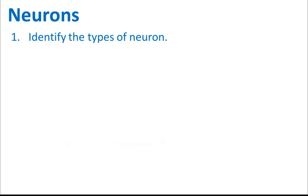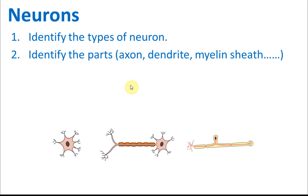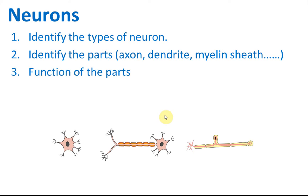First, you need to identify the types of neurons. In an exam, they may give you pictures and ask you to name the types of neurons — which one is the sensory neuron, which is the motor neuron, and which is the relay neuron. Second, you need to identify the parts of the neuron, such as the axon, the dendrites, and the myelin sheath. You also need to know the functions of these parts, as exams may ask you to identify the axon and state its function.